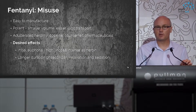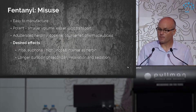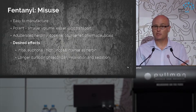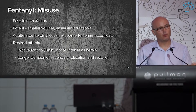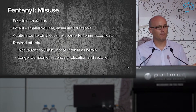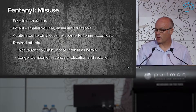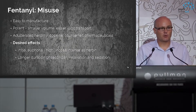Why is fentanyl misused? It's considered an acceptable alternative to heroin: the initial euphoria or high is not as intense, but it has a longer duration of the secondary relaxation and sedation phase. It's also easy to manufacture — precursors and equipment can be found online. It's very potent, so a smaller volume can be transported across borders; you could sew it into the sleeves of your clothing and still make a profit.